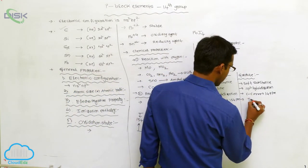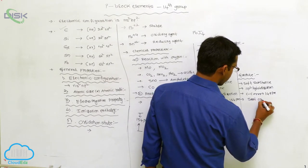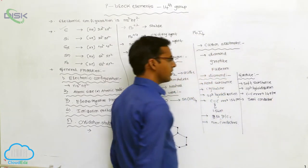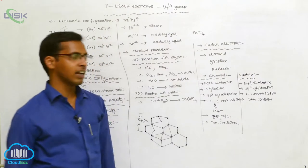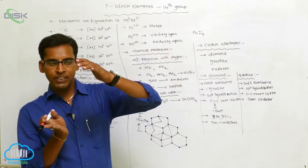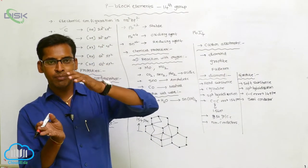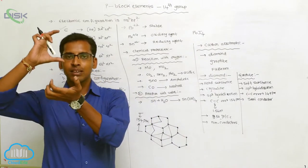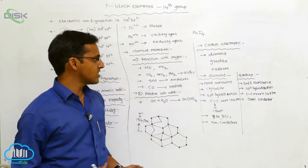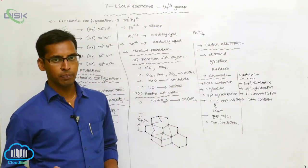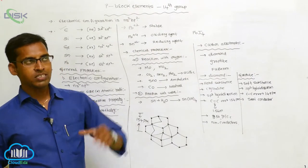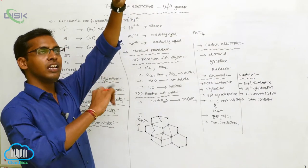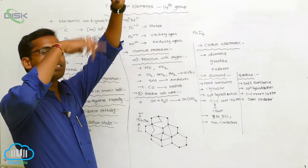Graphite acts as a semiconductor. Between the carbon layers, different layers are present with a distance of 340 pm. One carbon layer is above another, separated by that distance.